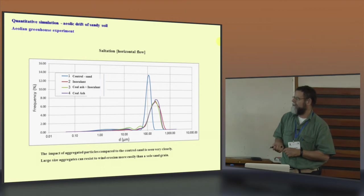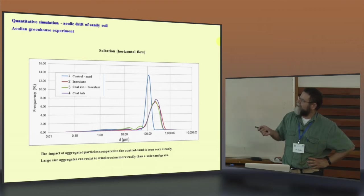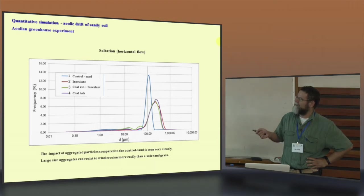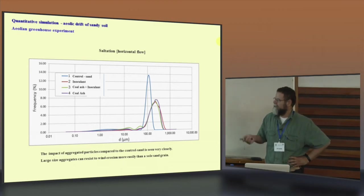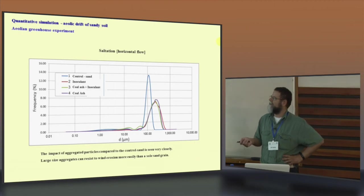The impact of the aggregate particle. Here you can see very clear that the aggregate when in the sand control are smaller than what's from the three treatment. If you have a larger aggregate, it's more easily to prevent wind erosion than the sand grain.